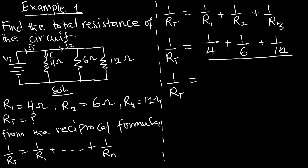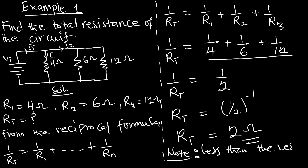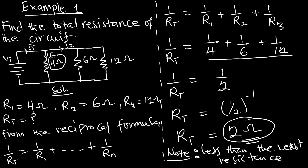When you sum 1/4 + 1/6 + 1/12, you get 1/2. The resistance is the reciprocal of this answer, so RT equals 2 ohms. Note: the total resistance for a parallel circuit is always going to be less than the least resistance. Looking at this diagram, the least resistance is 4 ohms, and the answer of 2 ohms is indeed less than that.